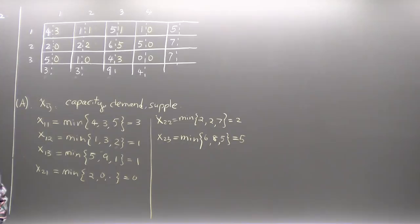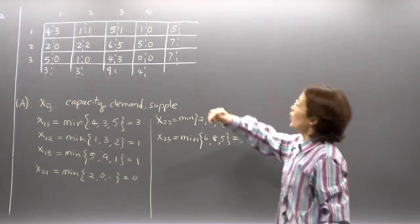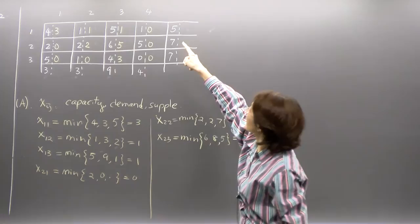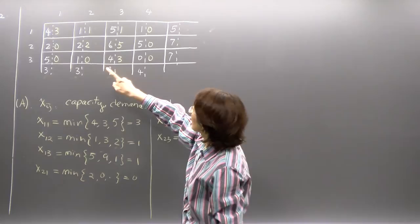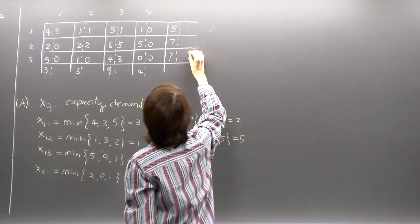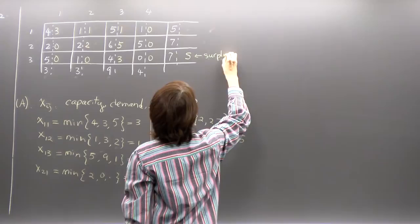That's my first attempt — of course it's not a good one, it doesn't work; it's my starting point and I will adjust. From origin one: 3 plus 1 plus 1 adds up to 5 — no surplus, everything shipped out. From warehouse two: 2 plus 5 equals 7 — everything shipped out. From warehouse three: I shipped only 3 units but had 7, meaning I didn't ship out everything. There is surplus here — I mark this S.